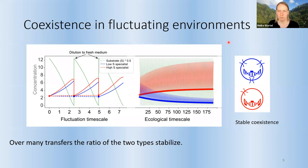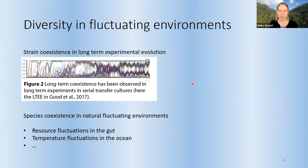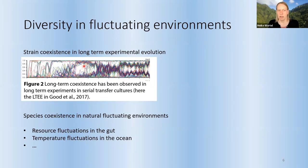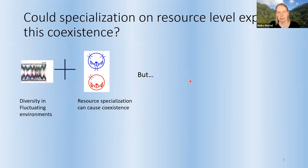When we look at fluctuating environments — for example, fluctuations in the ocean or in the human gut, or even very simple environments in the laboratory like the one we just discussed — we see a lot of diversity. So many species coexist. This is from a long-term evolution experiment and from the genomic data we see coexistence of different types. Combining this observation of diversity with this mechanism that can cause frequency-dependent selection, our question is: can specialization on resource level explain the coexistence?